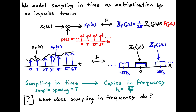It's good to review what we've done with sampling thus far. We model sampling in the time domain as multiplication by an impulse train. So if we start with a continuous time signal xc of t, we multiply it by an impulse train with impulses spaced apart by T seconds, and we get a sampled version of the signal xp of t. The areas of those impulses are scaled by the amplitude of xc of t. The signal can take on both positive and negative amplitude values.